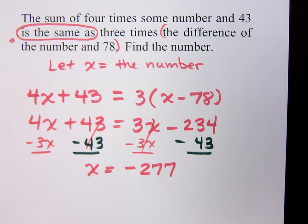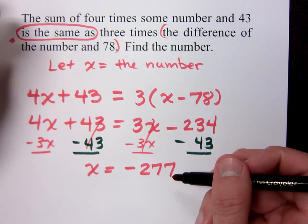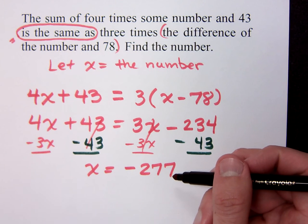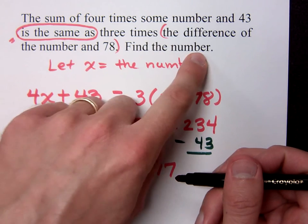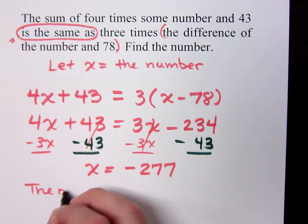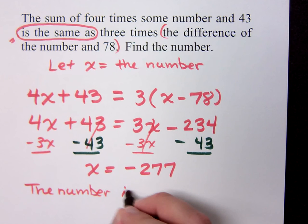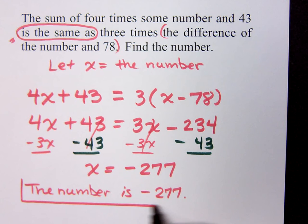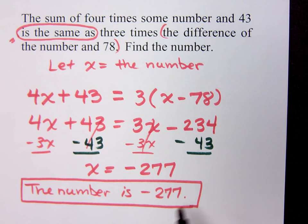Do I box that answer? No, you don't box that answer. You state your answer. This is hard to check unless you compare it with the original paragraph, because it's not based on a real-world example we can grasp. This is just a number — find the number — so our response is: the number is negative 277.